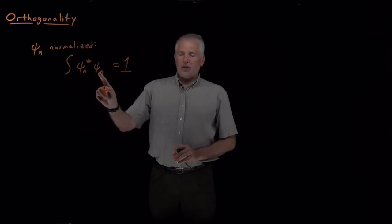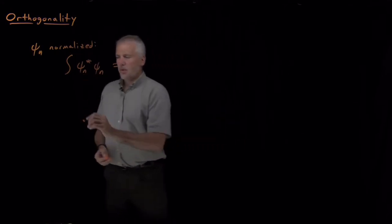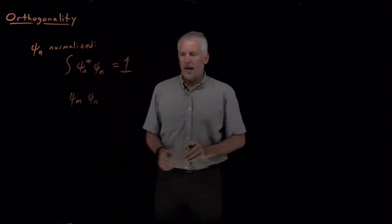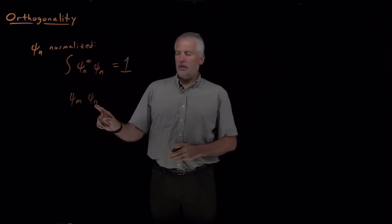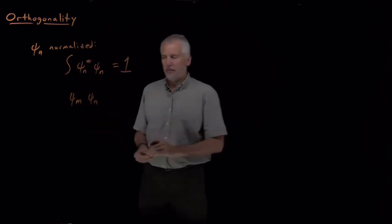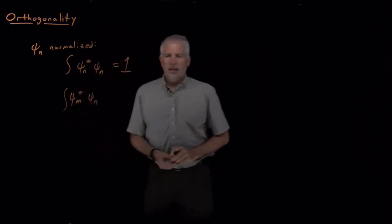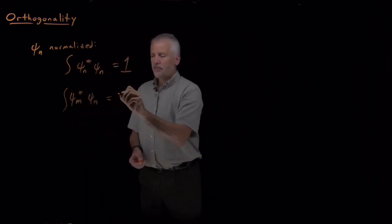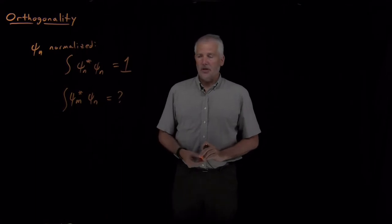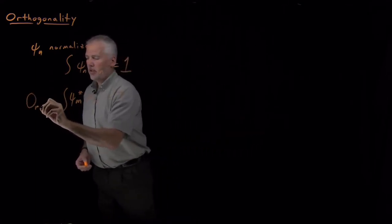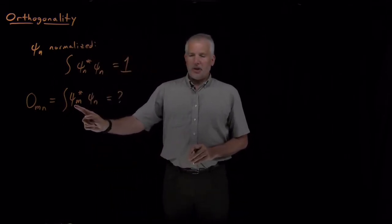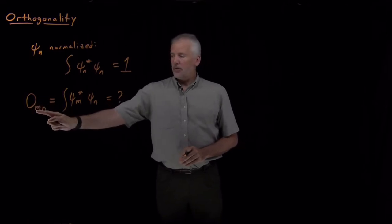We can also ask the question: what happens when I take a wave function and multiply it by a different one? Maybe I have wave function psi sub 1 for n equals 1, and a different wave function, say psi with n equals 5. The product of two different wave functions — again including a complex conjugation — and then integrating that product. So this integrated product between wave function m and wave function n, I'll call that O sub mn.